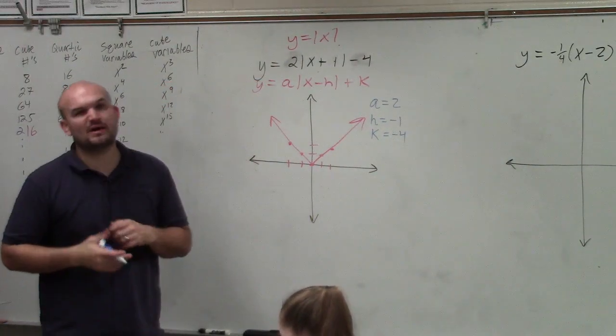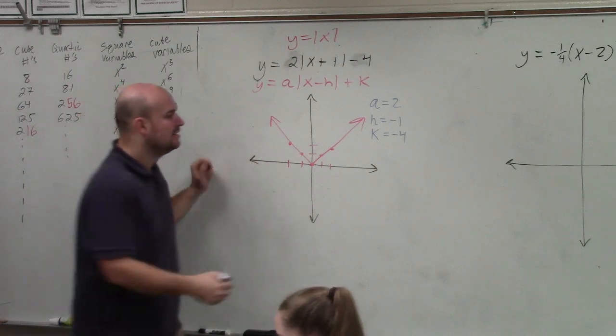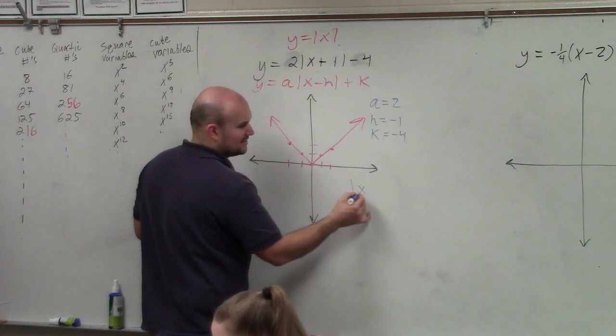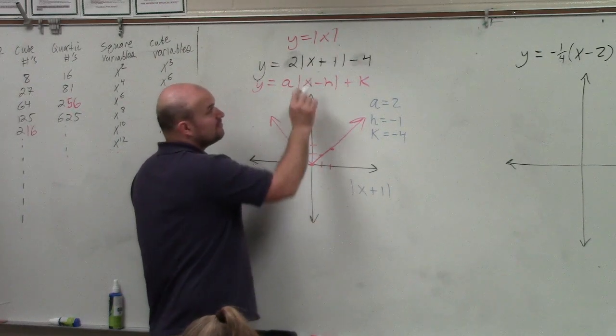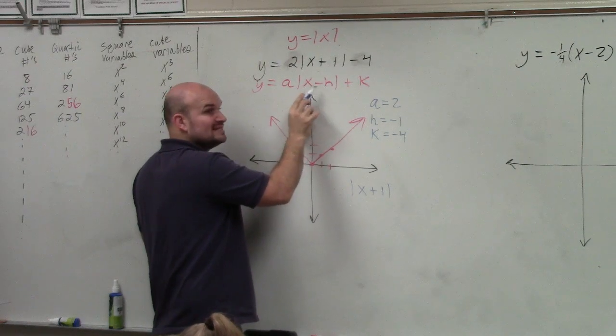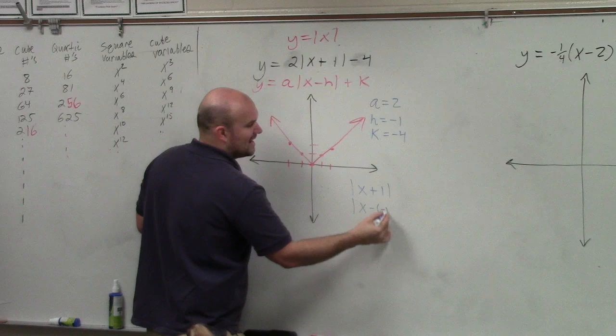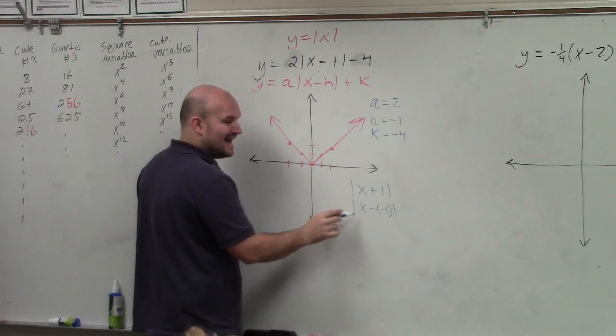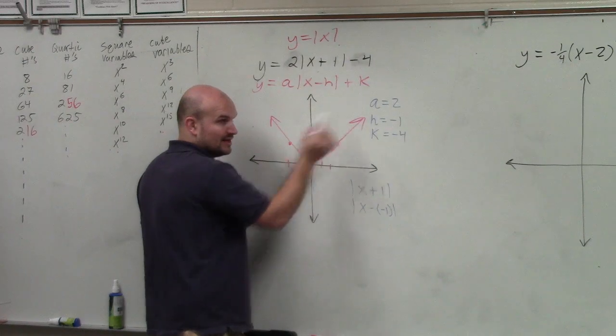Now usually people have a problem with why it looks like h is 1. Why is it negative 1? So since nobody looks like they're asking the question, I guarantee probably some people are asking that. So again, I'll go back through my instruction. Remember the formula is x minus h, right? You always need to be subtracting the h, or make it look like that. So we would write that as x minus h. So what is h? Negative 1.